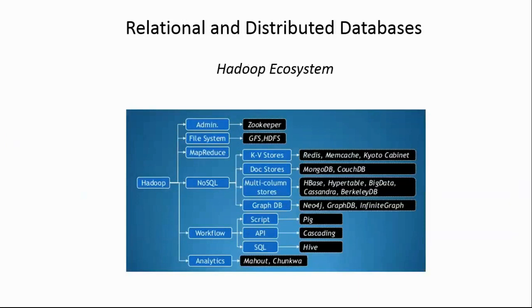Here is an overview of the Hadoop ecosystem to show where HBase itself stands. The Hadoop ecosystem has administration tools like Zookeeper, file systems like HDFS, and MapReduce as a computational technique. There are also a whole bunch of NoSQL databases that can be run on Hadoop. There are four different types: key-value stores, document stores like MongoDB and CouchDB, and multi-column stores — that is where HBase fits in.